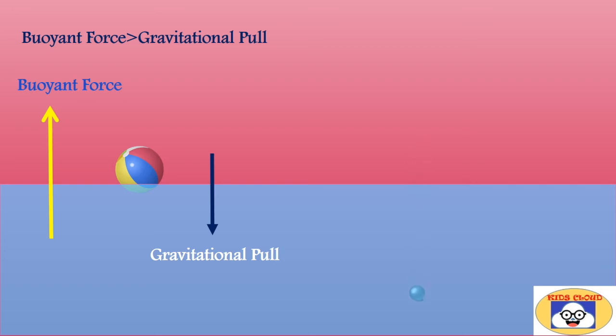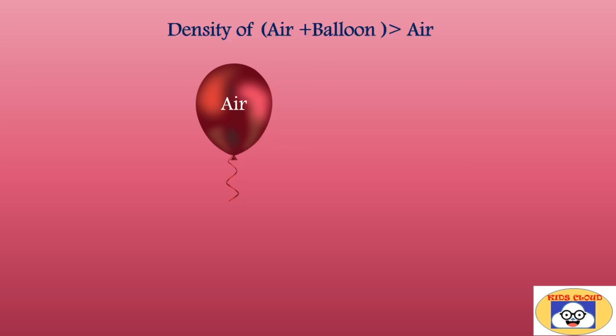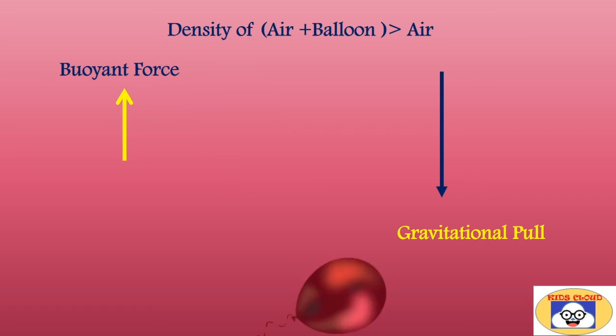In the case of metal, the density is more, hence the buoyant force acting on it is less than the gravitational pull — that's the reason the metal ball sinks. Like water, air is also a fluid. So we can explain the floating of a helium balloon in the air in a similar way. When we fill a balloon with air, the collective density of air and balloon is more than the density of air alone. That's why the buoyant force is less than the gravitational pull acting on it, and when you release the string, it gets pulled down and falls on the ground.